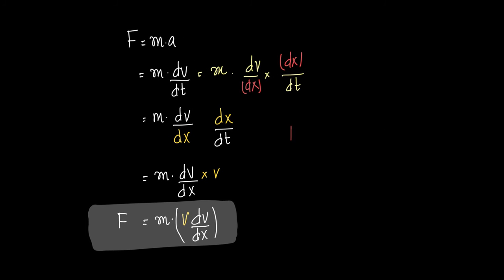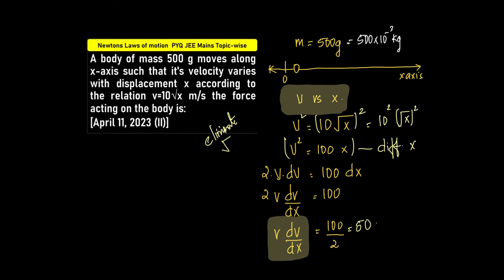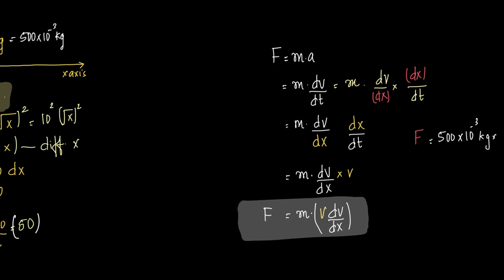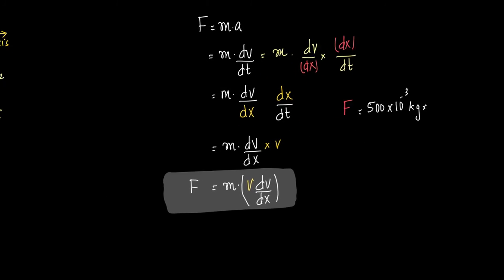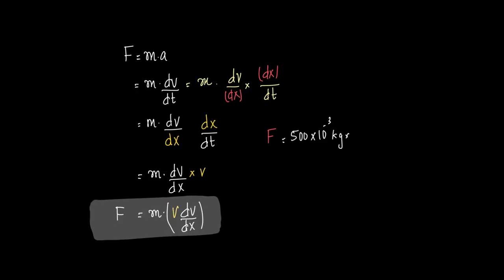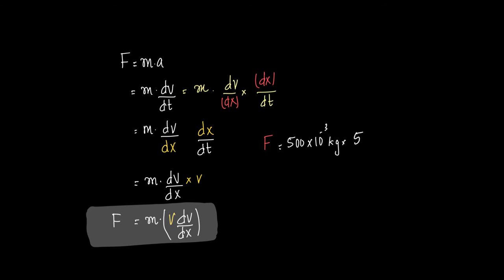Now, therefore F equals, what is m? The mass of the body is 500 into 10 to the power minus 3 kilogram into what is v. Let us go to the question again, 10 root x. So v, wait, not v, v is not 50. v into dv by dx is 50, therefore we can write this as into 50.